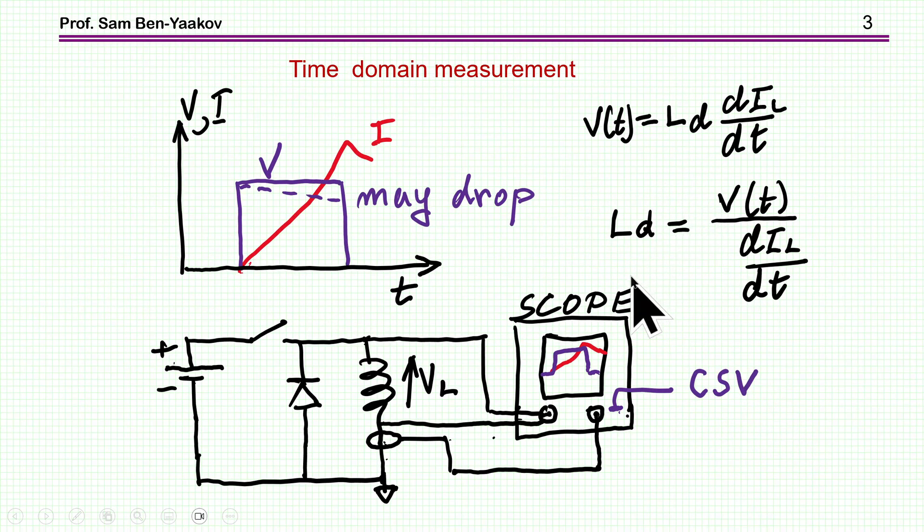Another way of measuring the inductance would be by a single pulse, exposing the inductor to a voltage. It doesn't have to be constant, it could actually be dropping, and usually it will be dropping because when you load the source with the inductor at high current, you might have a droop in the voltage. As a result of this voltage, then we are going to have the integral of V dt, so the current will go up.